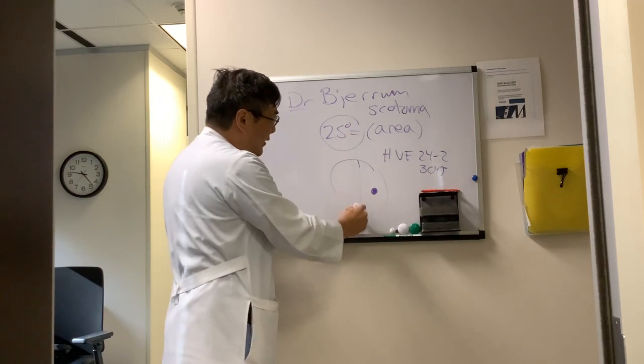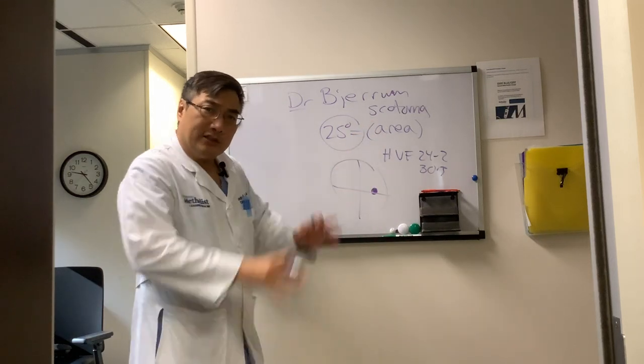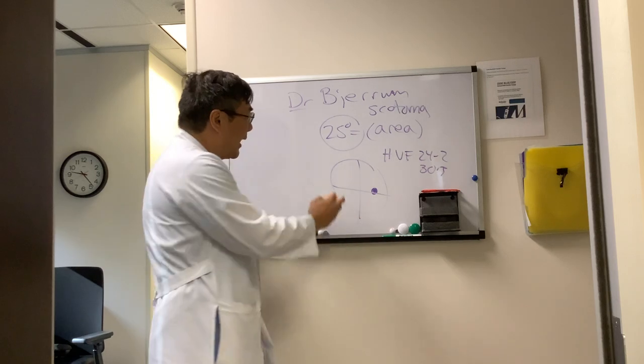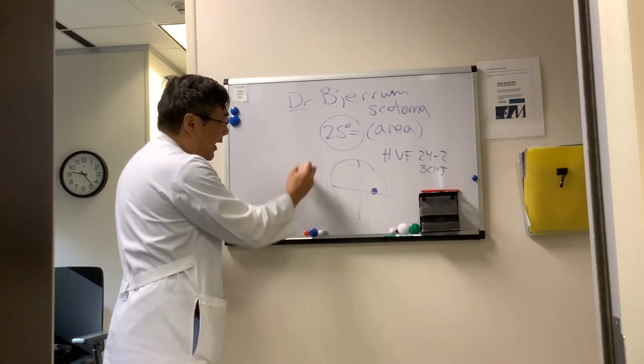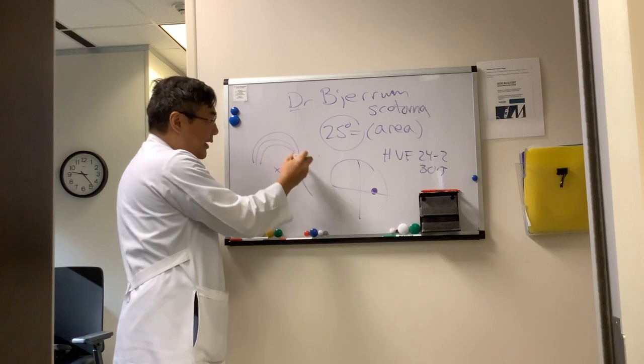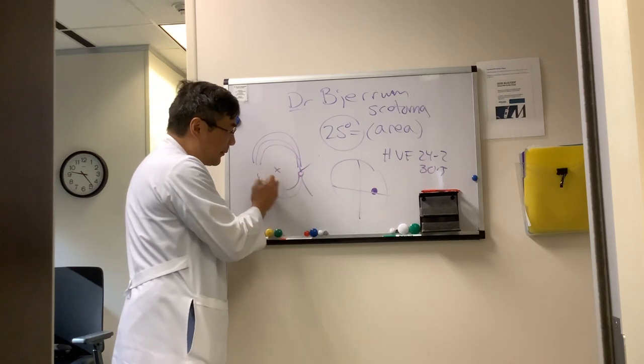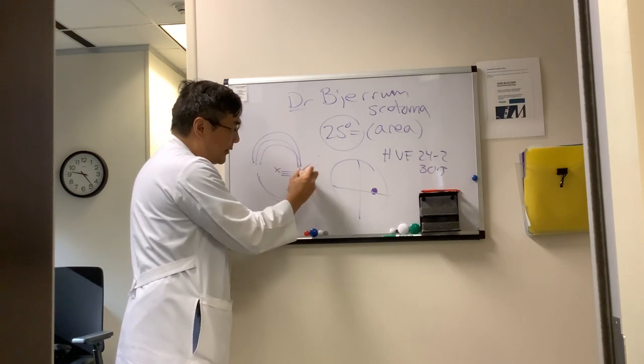The blind spot in the visual field is an absolute scotoma because there's no photoreceptors there. The nerve fiber layer in the eye runs in an arcuate fashion and inserts into the top and bottom of the optic nerve - papillomacular bundle and nasal.